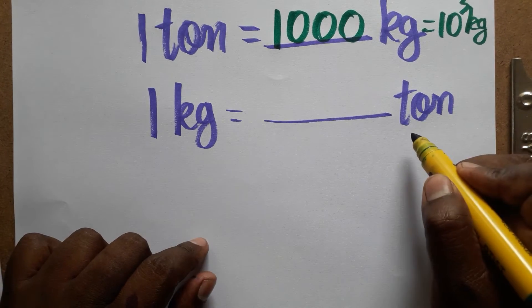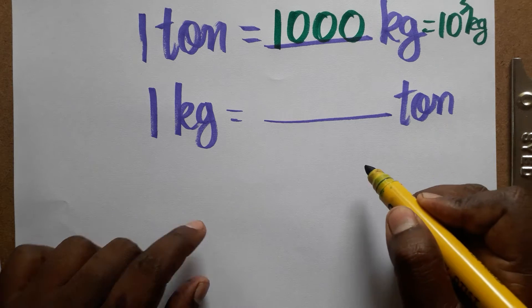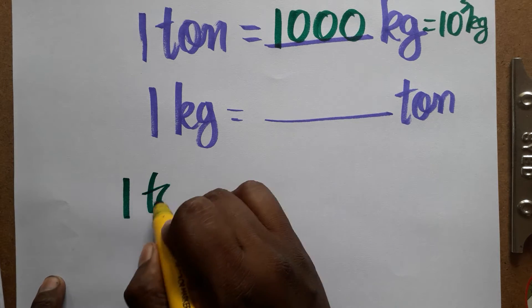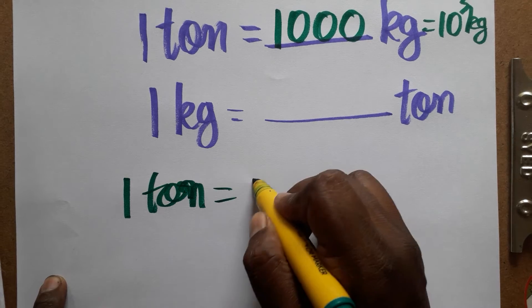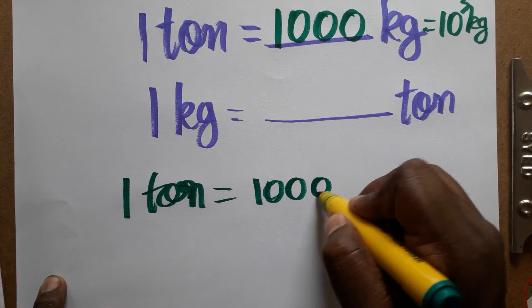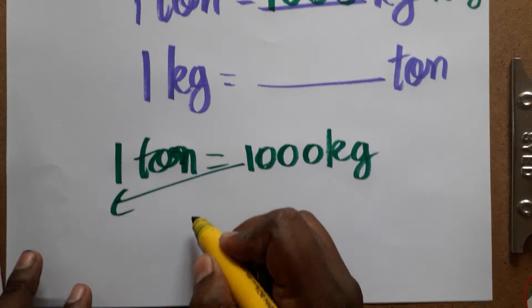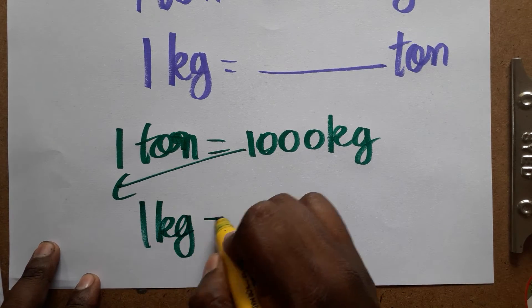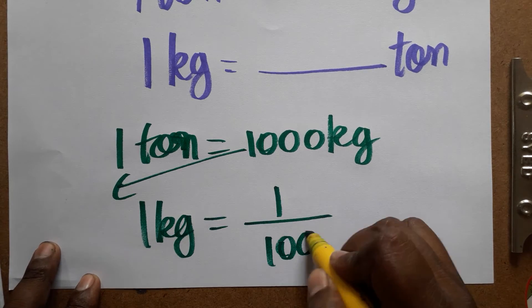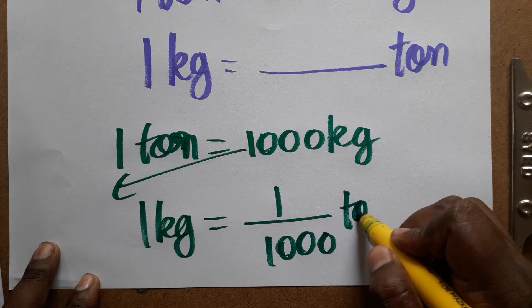So 1 kg equals how many tons? We can take 1 ton is 1000 kg. Now this is a little difficult to convert. I'm bringing 1000 as a denominator, so 1 kg is equal to 1 divided by 1000 ton.